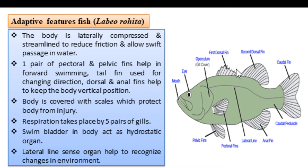There is a first dorsal fin and a second dorsal fin, along with other unpaired fins. These unpaired fins help to stabilize the body. When the fish is in the water, it will maintain the vertical position of the body. This vertical position is maintained by the dorsal fins, which also help in swimming and stabilizing the body.